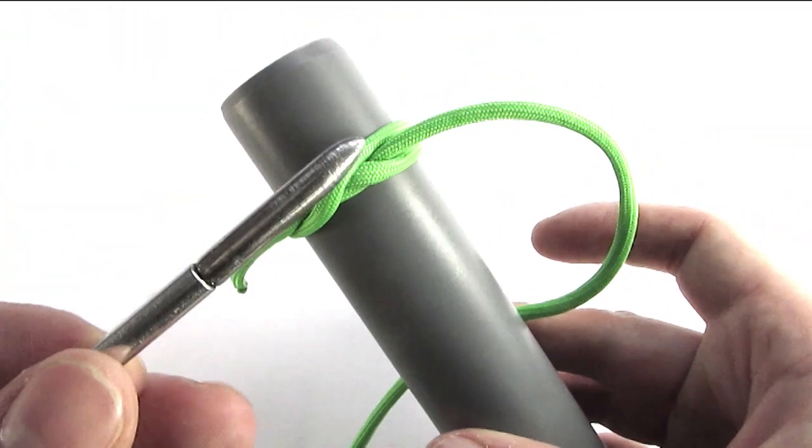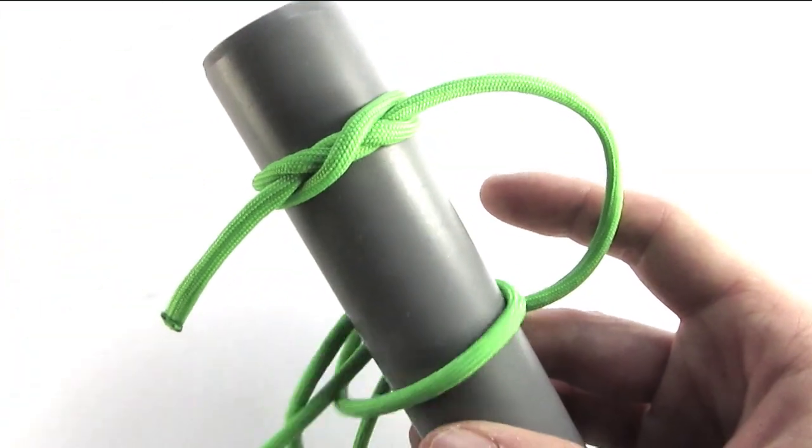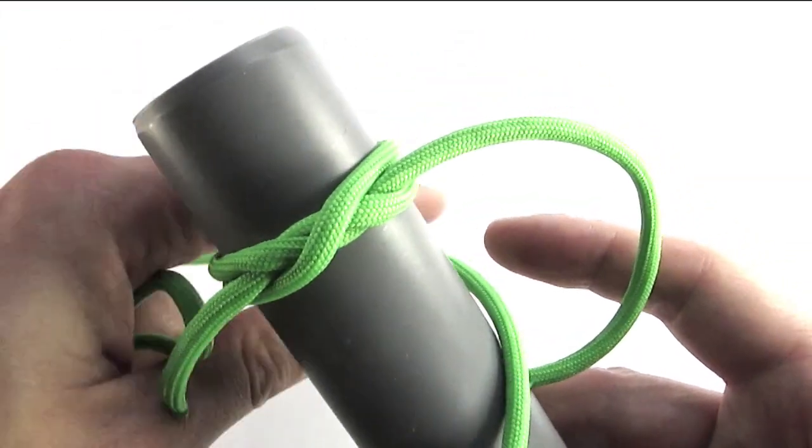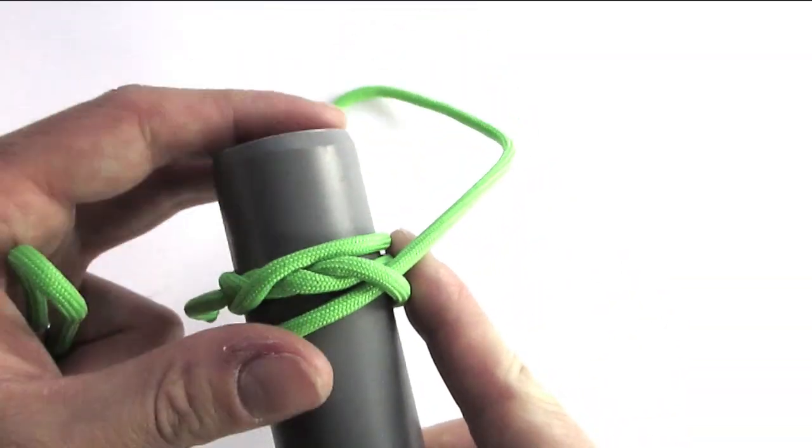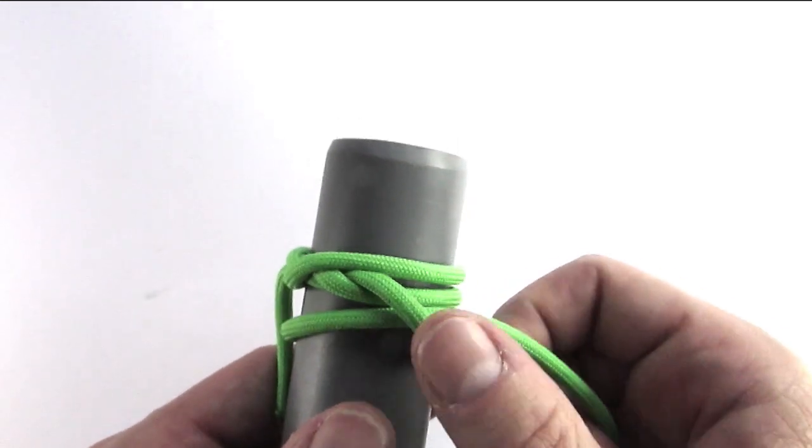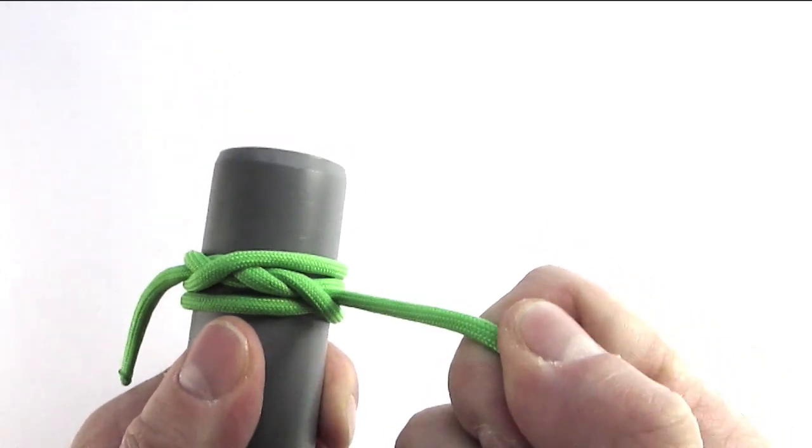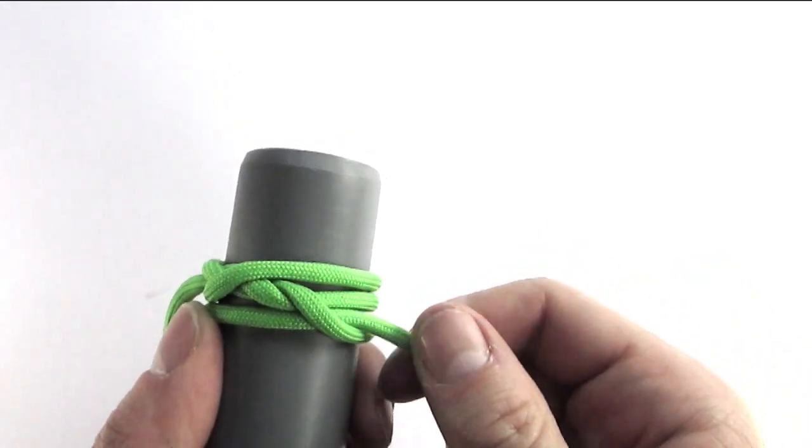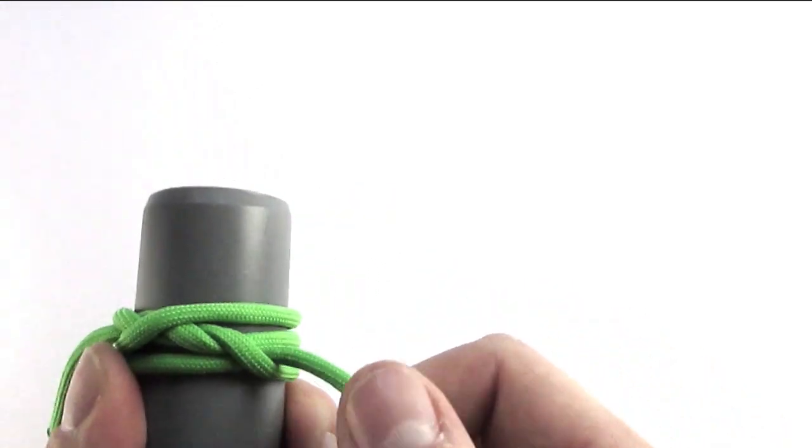So basically we're making a half hitch and then tightening it up. The way I tighten it is to first pull it onto one side and then towards the spiral end. And this will make your hitches a lot more consistent looking.